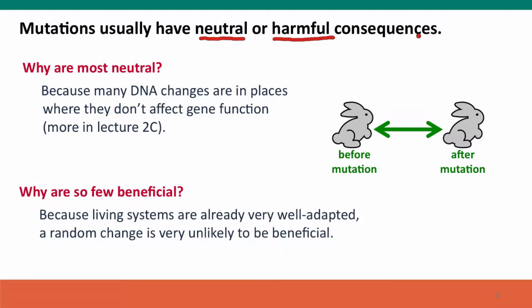Most of the rest are harmful. Very few new mutations are beneficial, and that's because living systems — the genetic DNA sequences that specify all the properties of living systems — are very well adapted. They're the product of billions of years of natural selection for better and better function. That means that if you make any random change, which is what a mutation is, the odds that this change makes the system function better are very, very small — in the same way that a random little change to the innards of your computer is very unlikely to make it function better.